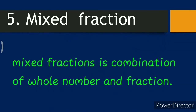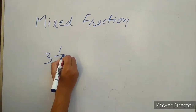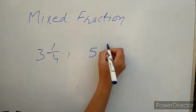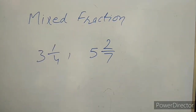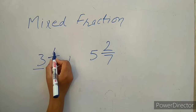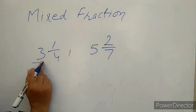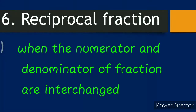Fifth: mixed fraction. A mixed fraction is a combination of a whole number and a fraction. For example, 3 and one over four, or 5 and two over seven, are known as mixed fractions. Here, 3 is the whole number and one over four is the fraction, so 3 and one over four is a mixed fraction.